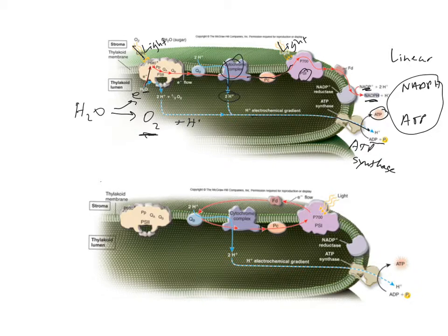Now, because these electrons are now used up, they're added to NADPH, the plant has to go and get more water to make new electrons and continue this process. So this linear process continues to need more and more water.